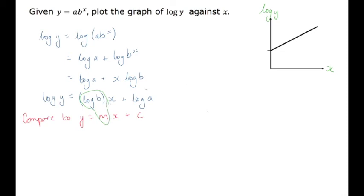Likewise, our intercept is always the additional term that doesn't contain an x. So I can come down here and say, I now know what my gradient is. My gradient m is equal to log b, that's my coefficient of x. And my c, my y-intercept, is equal to log a.